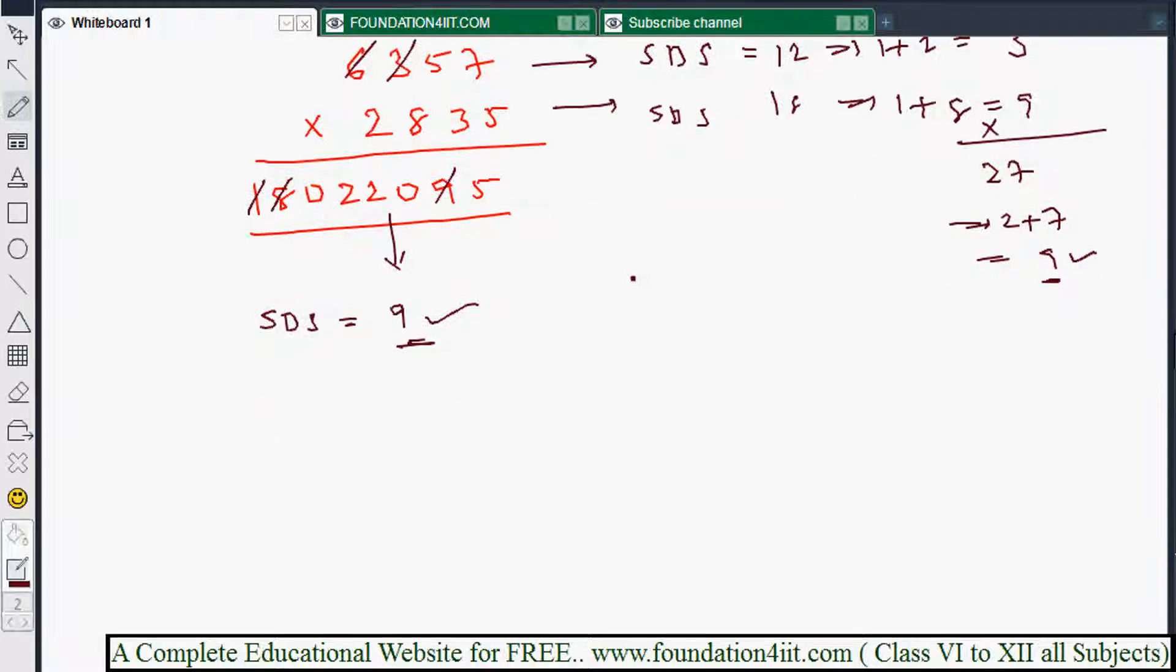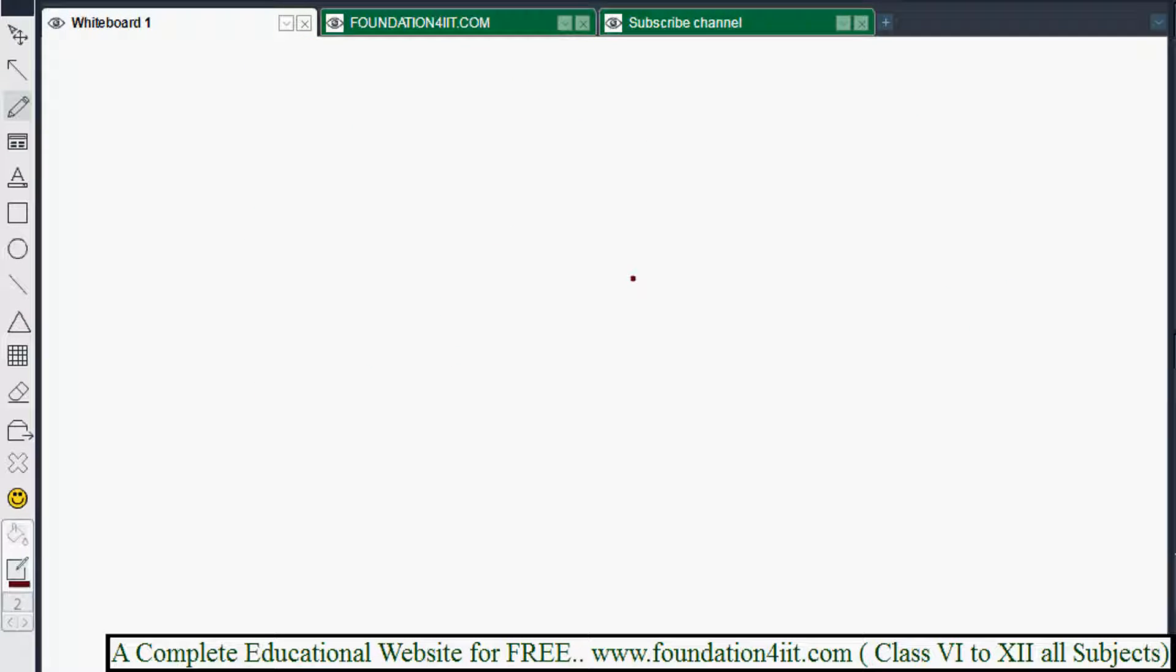In case if it is not tallied, it means it is wrong. Let's take one more example. 5864 multiplied by 2753, got the answer 16443792. Now verify if it's right or wrong.